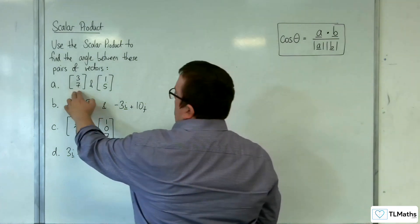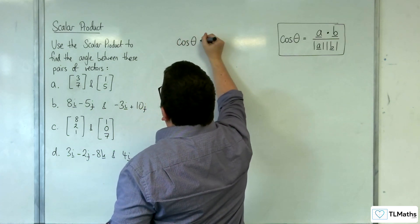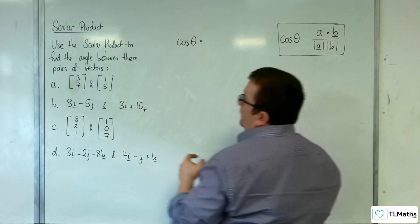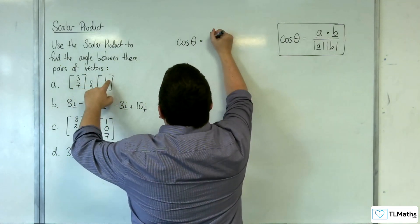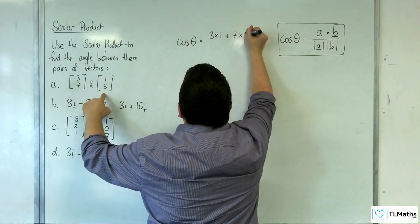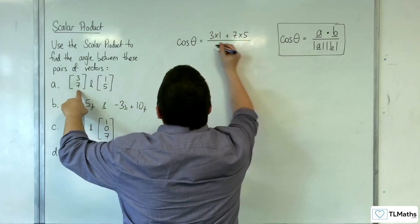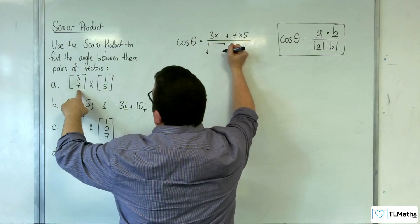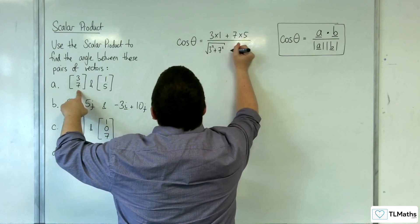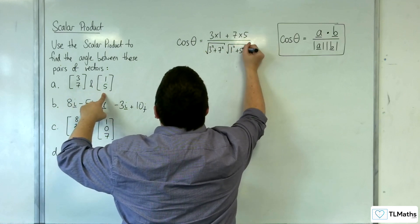Let's go with A first. We've got vectors (3, 7) and (1, 5). So cosine theta is going to be equal to A dot B first. That's 3 times 1, plus 7 times 5, divided by the lengths of the two vectors. The length of the first vector is the square root of 3 squared plus 7 squared, times the length of the second vector, which is the square root of 1 squared plus 5 squared.